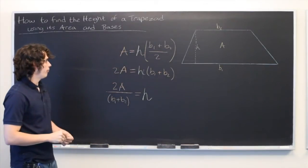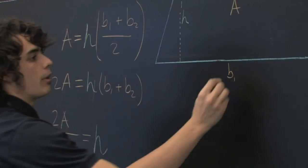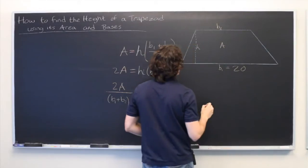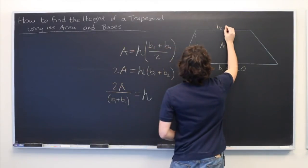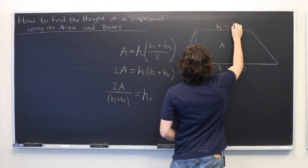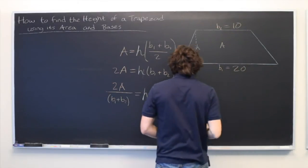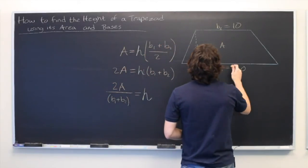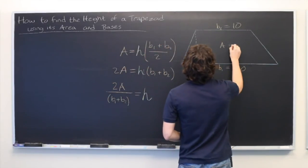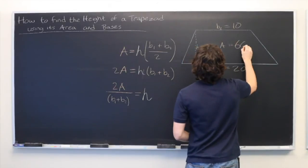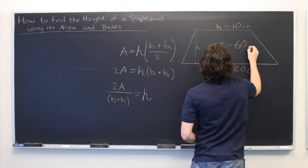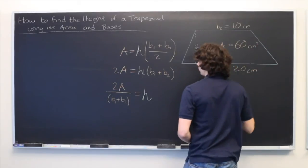So we have a quick example. Let's say that our bottom base, the larger one, is of length 20, and the upper base is equal to length 10. Let's say that we know that the total area is 60. We'll put it all in centimeters.